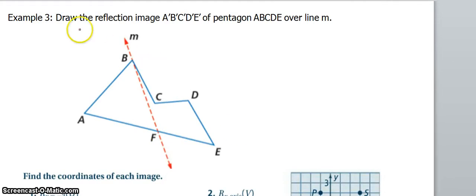Go ahead and try this one. Draw the reflection image of this shape. Now we have the line going through the shape. So now everything on the left will flip to the right. Everything on the right will flip to the left. And anything on the line will stay on the line.